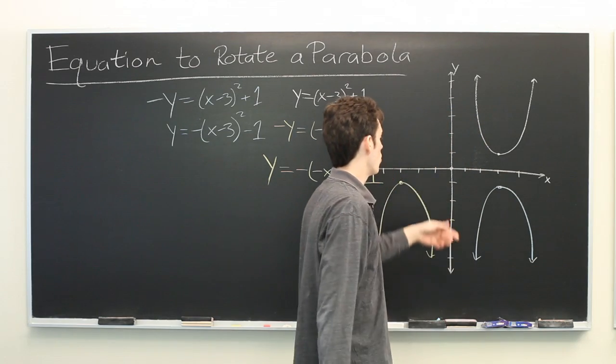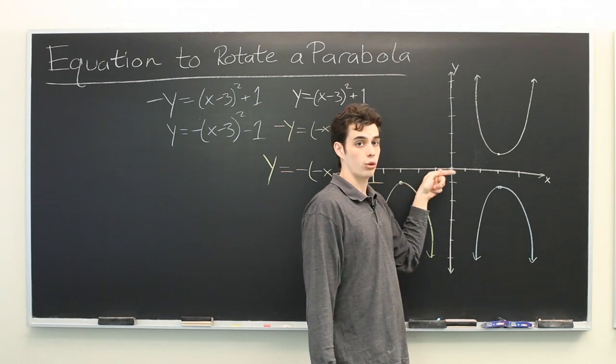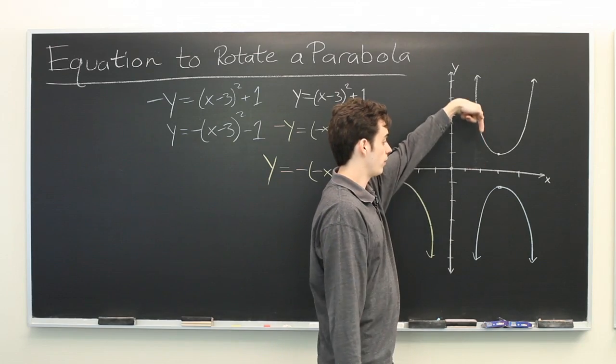So here, we are still shifting the vertex 3 units to the right. Now we are shifting it 1 unit down.